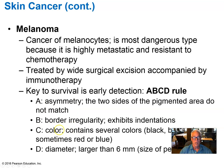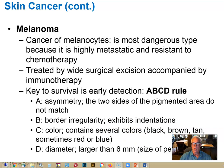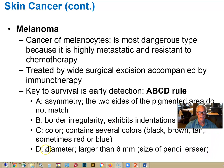Color: moles on a person's body normally fall within a predictable range, and each mole tends to be fairly uniform in color. If the color becomes diverse within a mole's structure or different relative to other moles on the body, that's a bad sign. Diameter: if a mole becomes larger and exceeds 5 or 6 millimeters in diameter, it should probably be considered dangerous and removed.